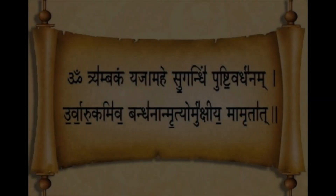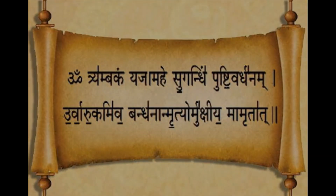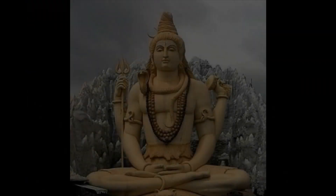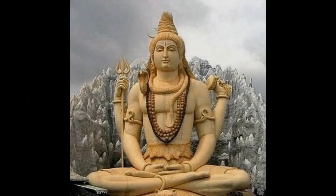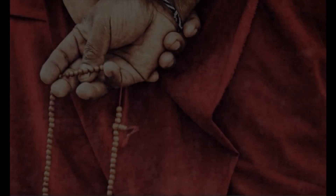Om Trayambakam Yajamahe Sugandhim Pushti Vardhanam Urvarukam Yavabandhanam Mrityura Mukshya Mamaritat — which means: we worship the three-eyed one who is fragrant and nourishes all beings. May he liberate me from death for the sake of immortality, even as the cucumber is severed from its bondage of the creeper.